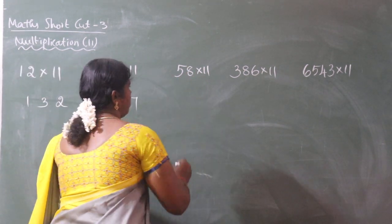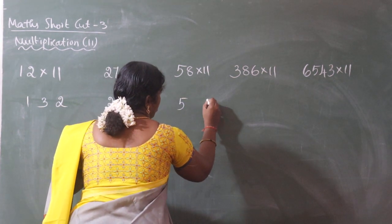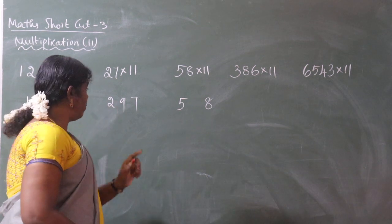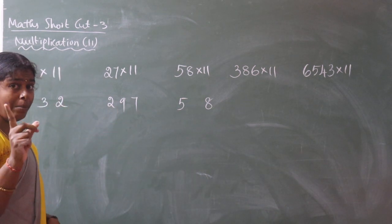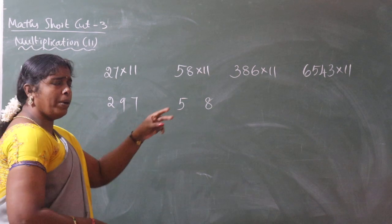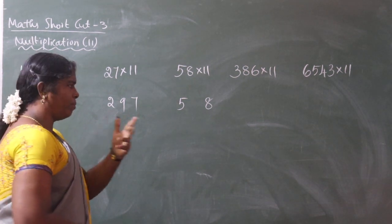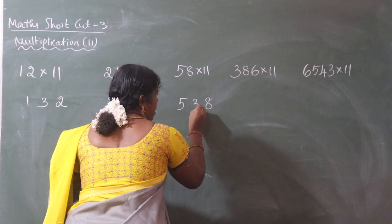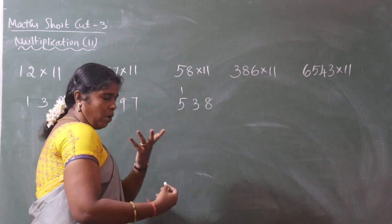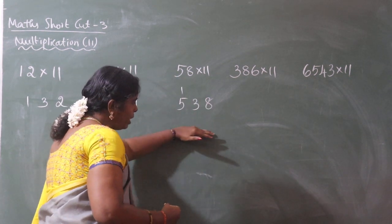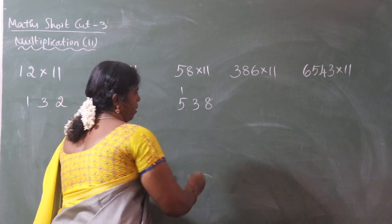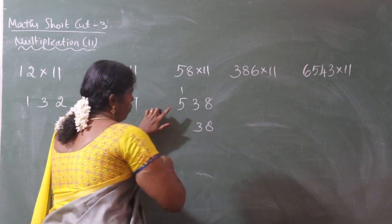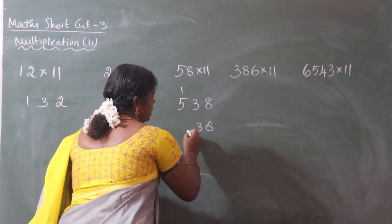Next example: 58 into 11. We write 5, here is 8. 5 plus 8 is 13. When the middle digit sum gives us two digits, we missed the number — 13 gives us 3 in the middle and carry 1. We add the 1 to 5, getting 6. So: 8, 3, 6. The answer is 638. How easy it is to solve the sum!